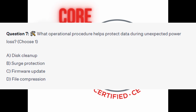Question 7. What operational procedure helps protect data during unexpected power loss? Choose one. Is it A, disk cleanup? Is it B, surge protection? Is it C, firmware update? Or is it D, file compression?